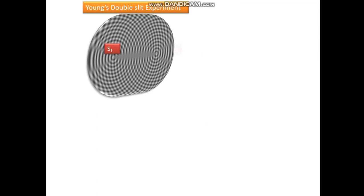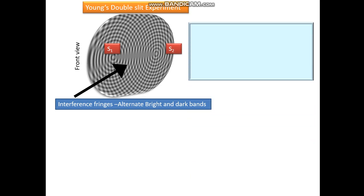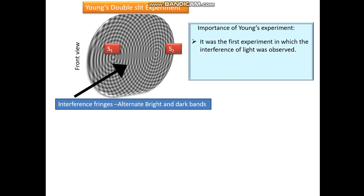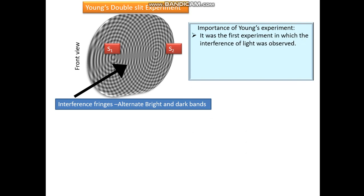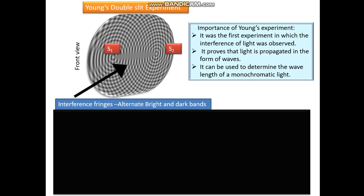This is the front view of Young's double slit experiment showing the interference fringes — the alternate bright and dark bands. The importance of Young's experiment: it was the first experiment in which interference of light was observed, it proves that light propagates in the form of waves, and it can be used to determine the wavelength of monochromatic light.